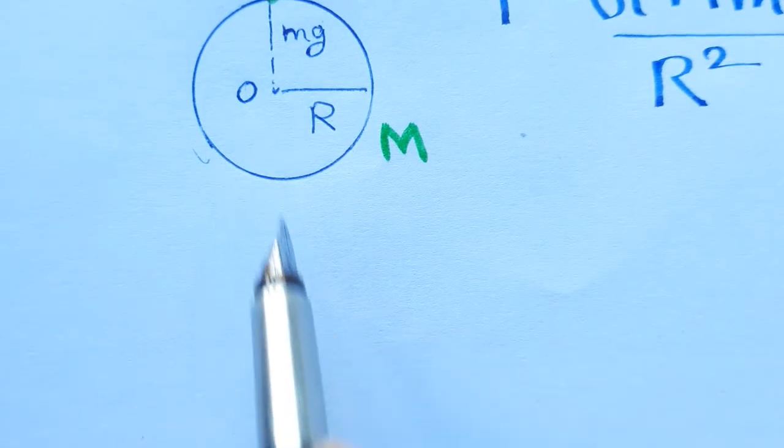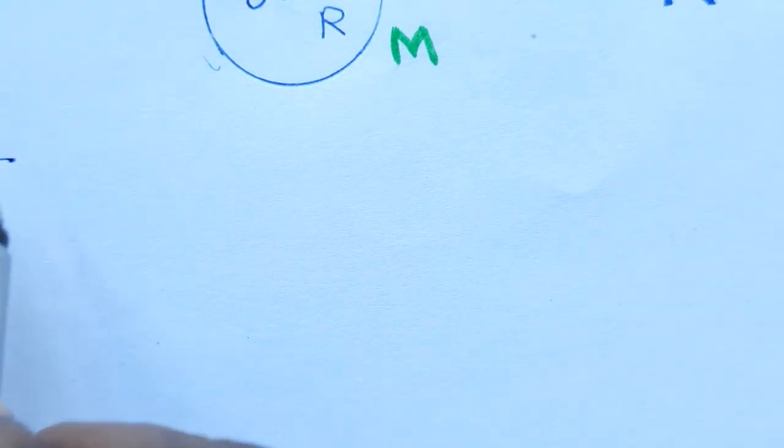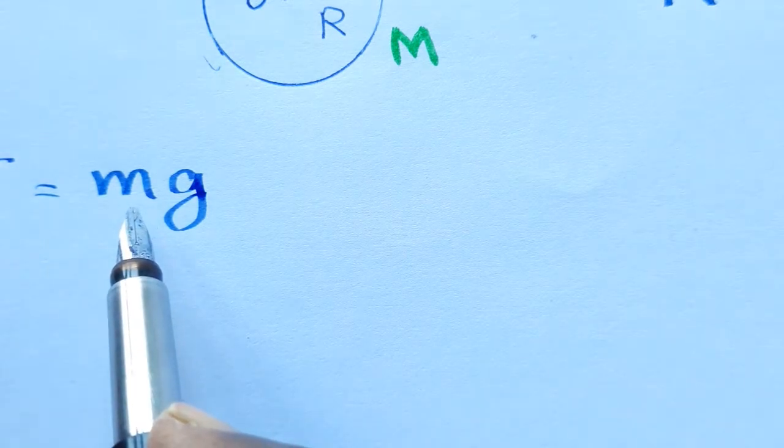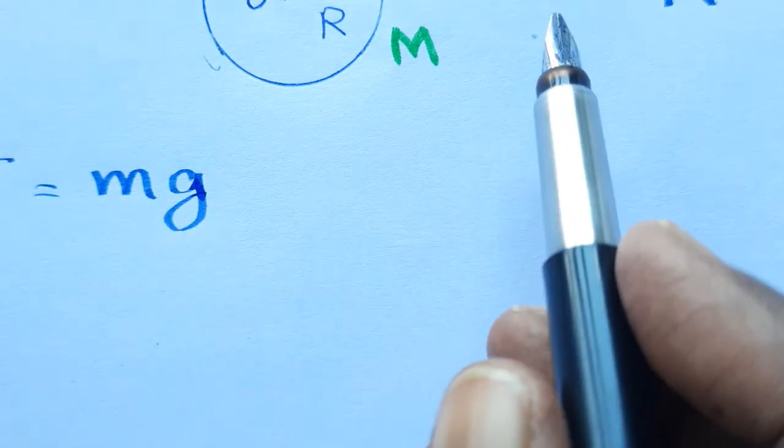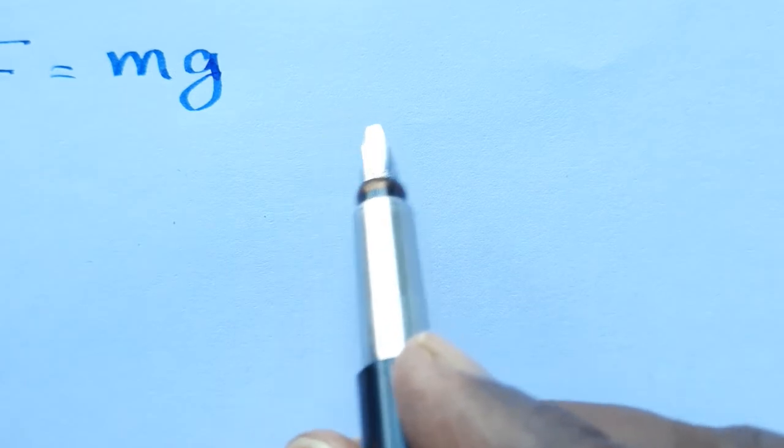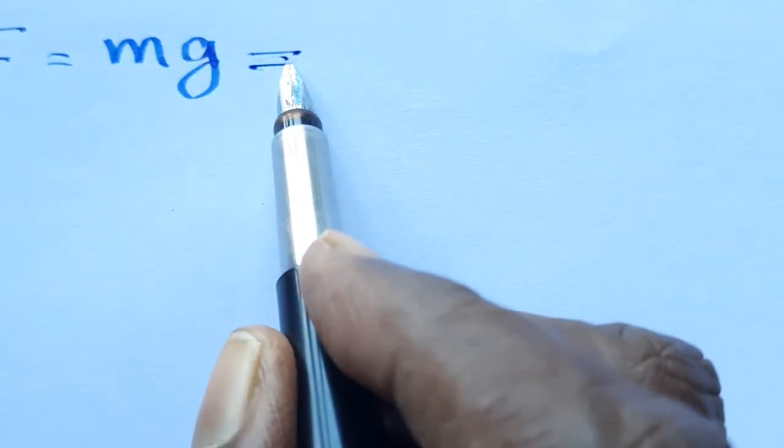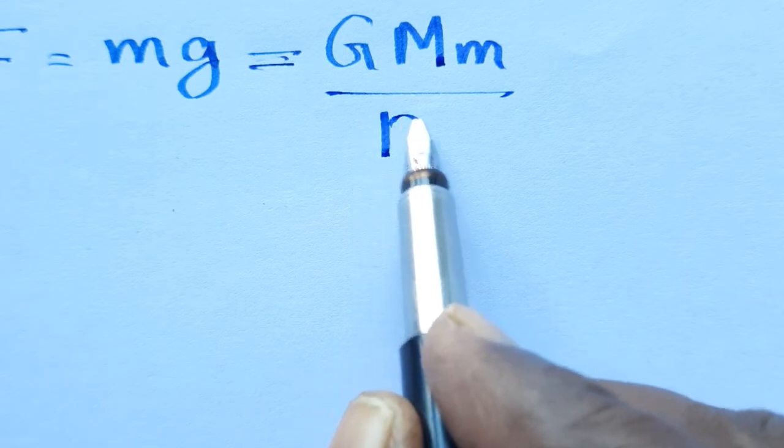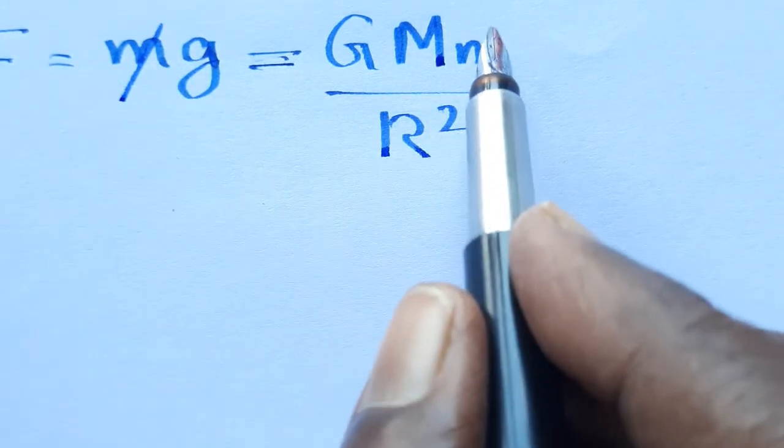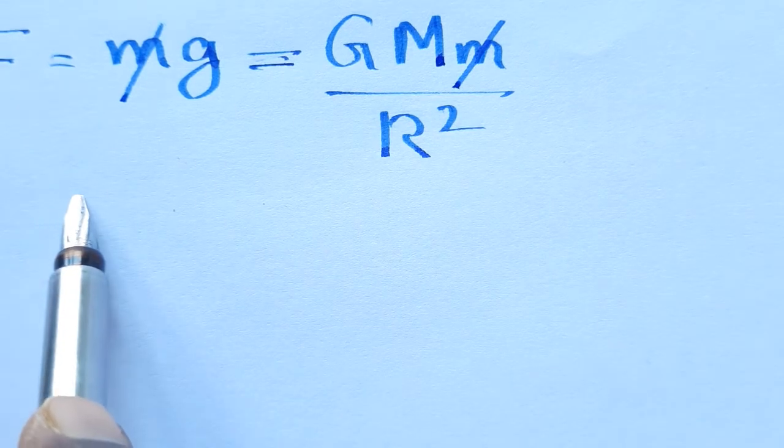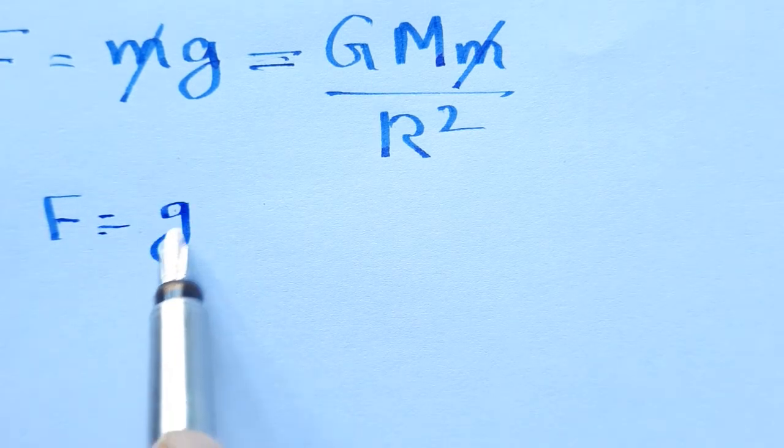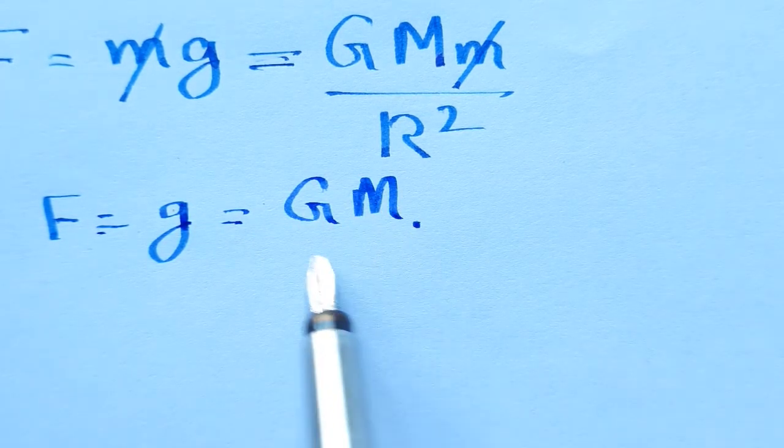Newton's second law says force F is equal to M G, force acting on a mass is equal to M G. So we equalize them. F is equal to G capital M small m by R square equals M G. Small m is canceling. So we get g is equal to G capital M by R square from this equation.